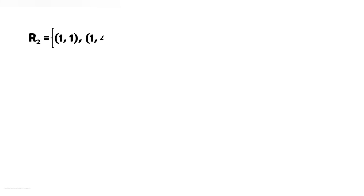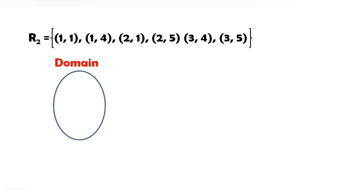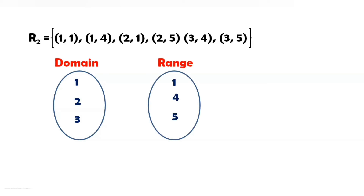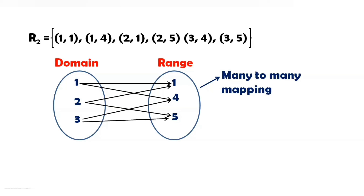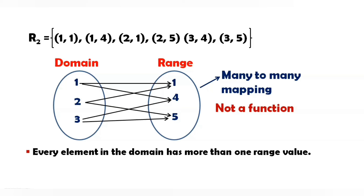Let us consider another relation R = {(1, 1), (1, 4), (2, 1), (2, 5), (3, 4), (3, 5)}. Now let us see the mapping between the domain {1, 2, 3} and the range {1, 4, 5}. Here 1 is mapped to 1 and 4, and 2 is mapped to 1 and 5, and 3 is mapped to 4 and 5. This type of mapping is called many-to-many mapping. Think — is this a function or not? No, it is not a function because every element in the domain set has more than one range value.